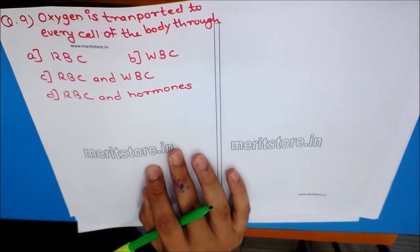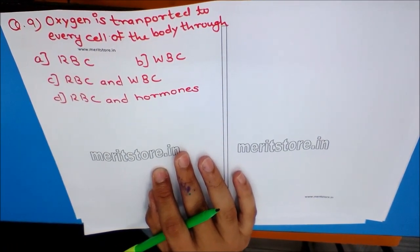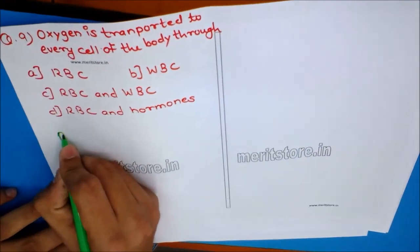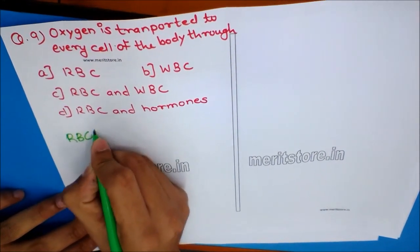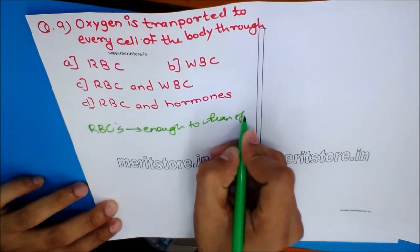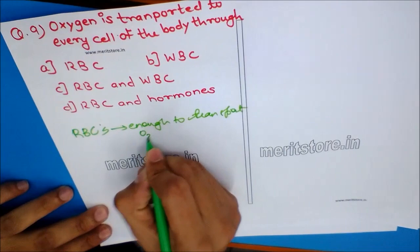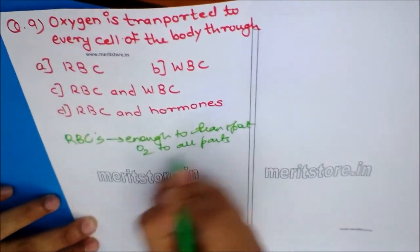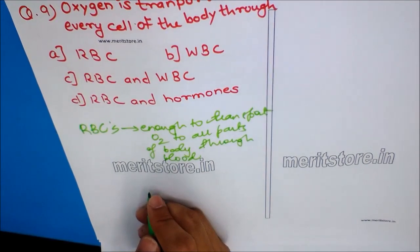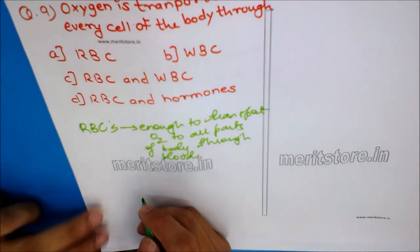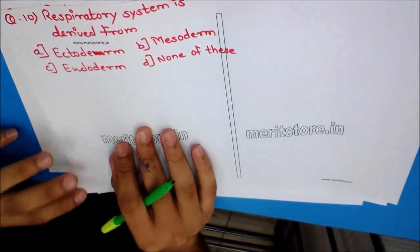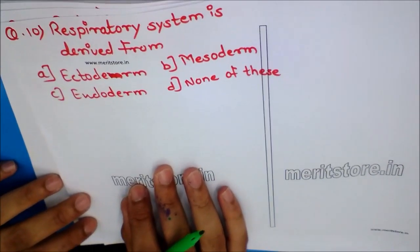Question 9: Oxygen is transported to every cell of the body through? Options: A) RBC, B) WBC, C) RBC and WBC, D) RBC and hormones. RBCs (red blood cells) alone are sufficient to transport oxygen to each and every cell of the body through blood, and do not need help from WBCs or hormones. The answer is option A — RBC.